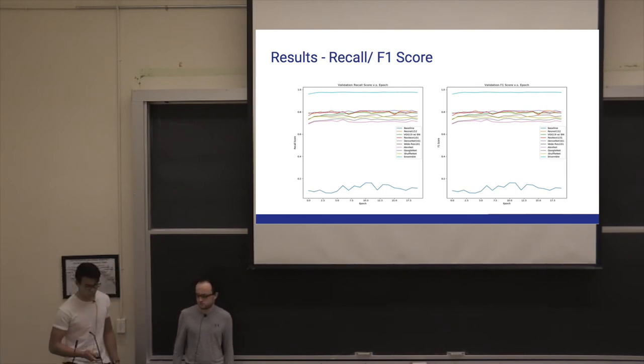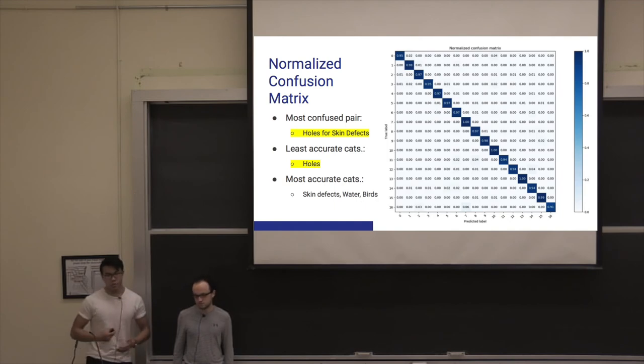Here's our confusion matrix. We chose to use a normalized confusion matrix because there was high variance in the number of samples between each phobia. From this confusion matrix we can see that the most confused pair was on the lower left where we mistaken holes for skin defects. Upon cleaning data we found that this was actually reasonable because a lot of the training samples for skin defects were like moles and pimples that had very similar features as what was seen in the holes dataset.